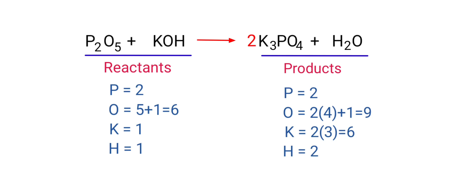The phosphorus atoms are now balanced. Next we need to balance the potassium atoms. To do this we need to put a coefficient of 6 in front of KOH.